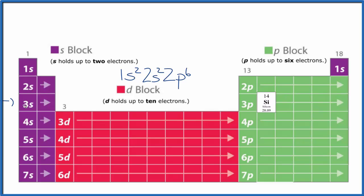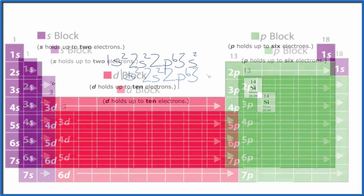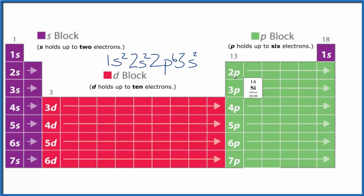We're back around 3s1, 3s2. Then we go over to p, we have 3p1, 3p2. And we're at silicon. If you add these all up, you'll get 14 electrons. So this is our electron configuration.